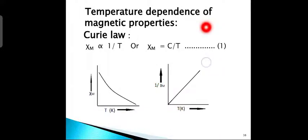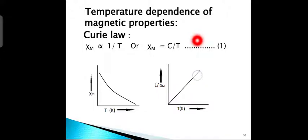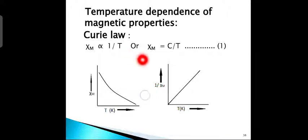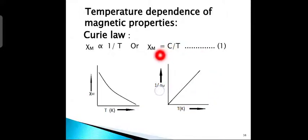Temperature dependence of magnetic properties: Curie's law. Curie established in 1895 that the paramagnetic susceptibility is inversely proportional to the absolute temperature. Mathematically, χ_M is inversely proportional to temperature T, or χ_M = C/T (equation 1). C is the Curie constant and is characteristic of the substance. This expression is called Curie's law.